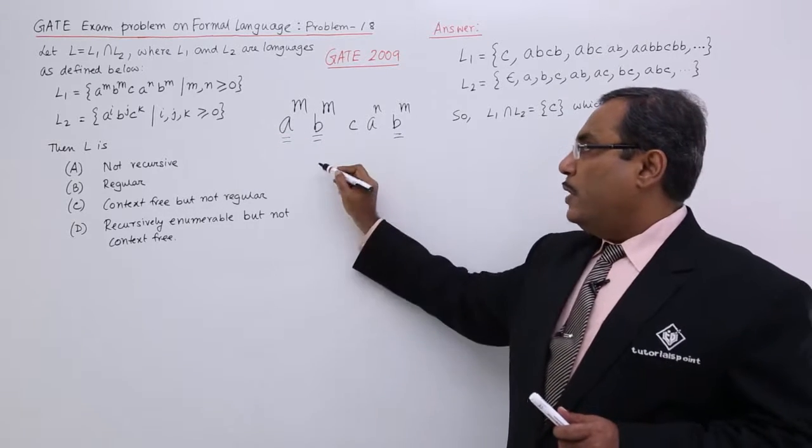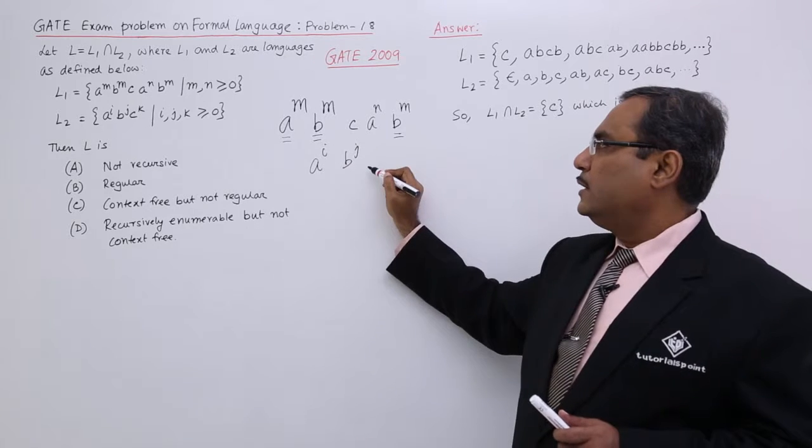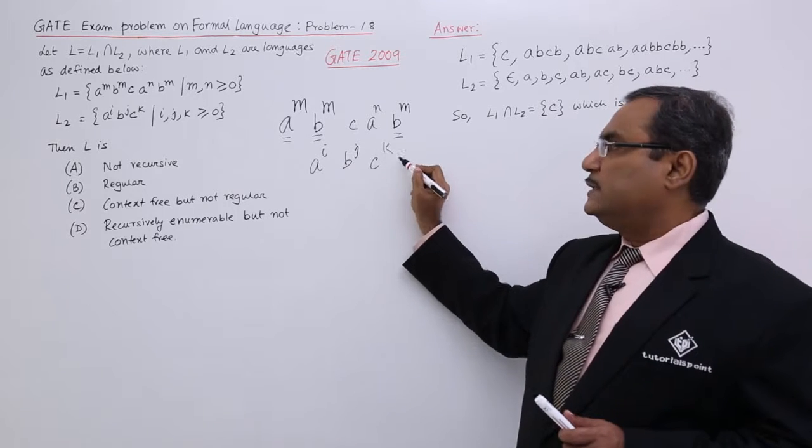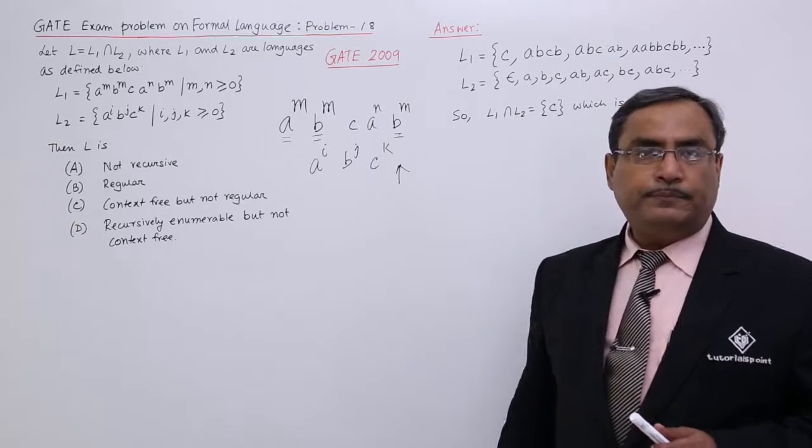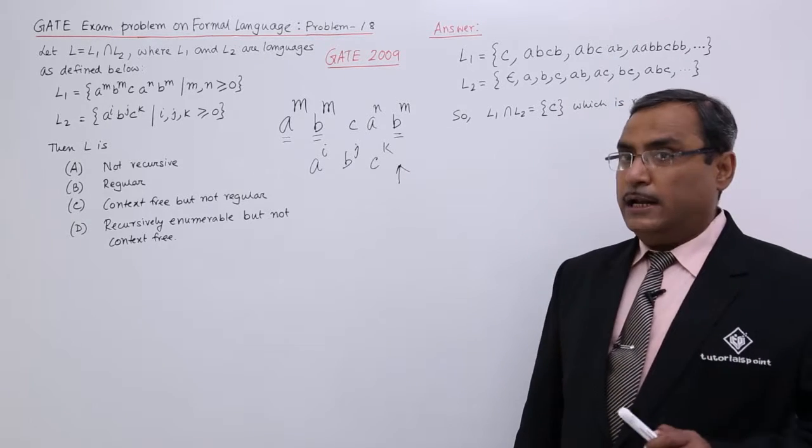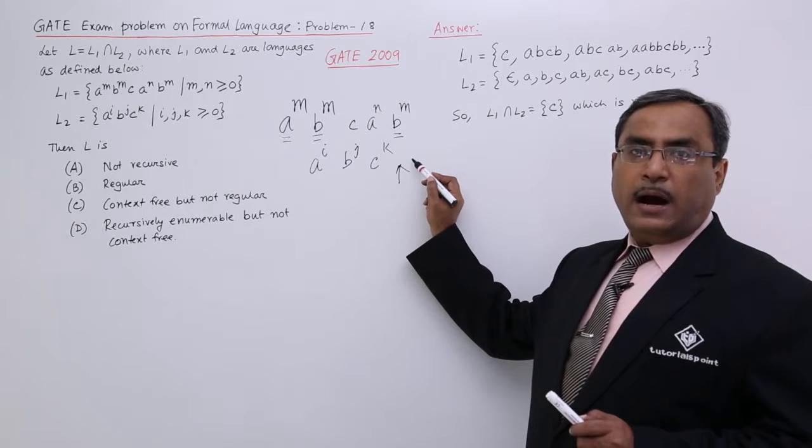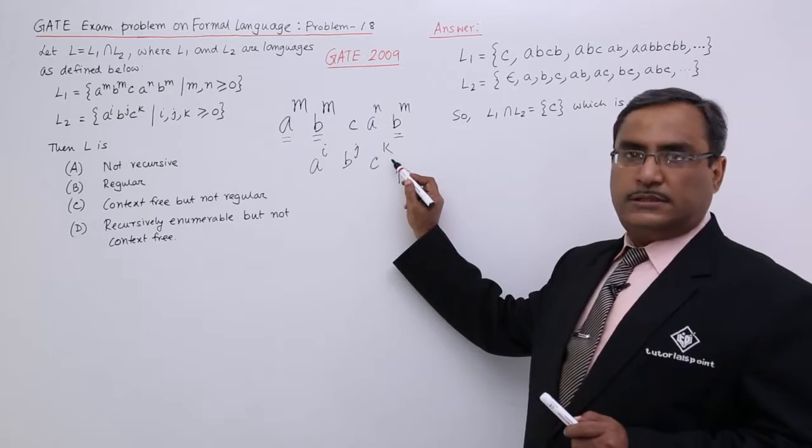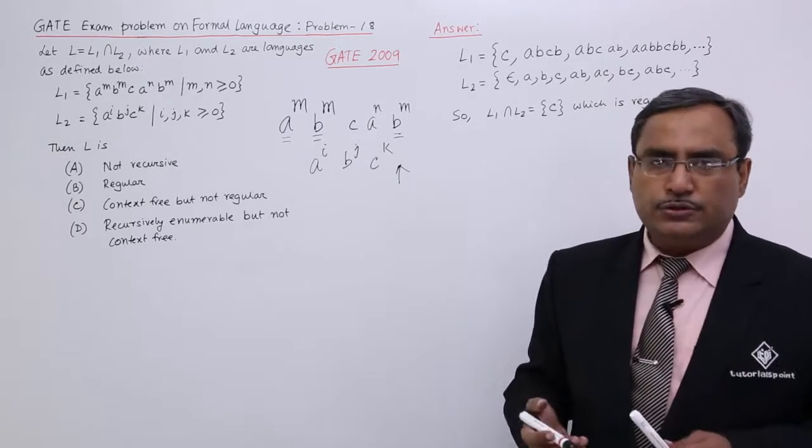What about the next one? We are having some number of A's, some number of B's, some number of C's. But you see, after C we are having nothing. That means no terminal can come after C, because C to the power of K is the last. Obviously, i, j, k can be void also, can be 0 also.